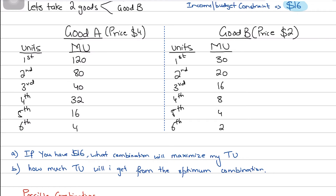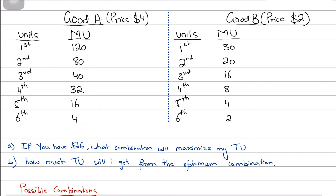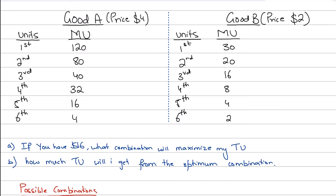Now, if I ask you: you have 16 dollars — should you buy good A or good B first? You might say the marginal utility of the first unit of A is 120, compared to the marginal utility of good B which is 30, so obviously the first unit we should buy is good A and not good B.